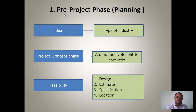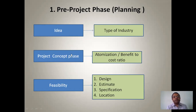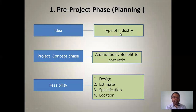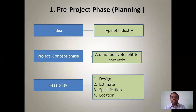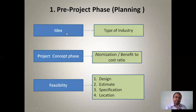Now we'll go in detail into all the phases. The first one is the pre-project phase, that is the planning phase. This planning phase is divided into three parts: idea, project concept phase, and feasibility. Under 'idea,' we identify which type of industry we are going to construct — for example, a textile industry, a plastic industry, or a sugar industry. That idea is considered under this part.